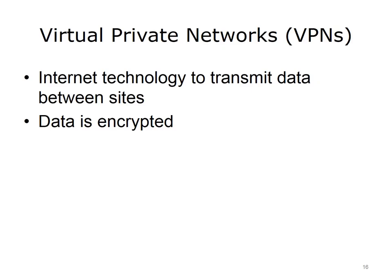Virtual Private Networks, VPNs, use Internet technology to transmit data between sites. The data is encrypted as it travels from site to site and is kept separate from other data traveling on the Internet. Think of it as an HOV, or high-occupancy vehicle, lane on a four-lane highway.